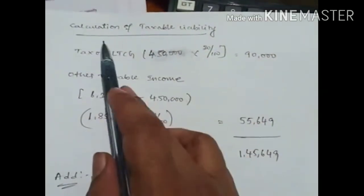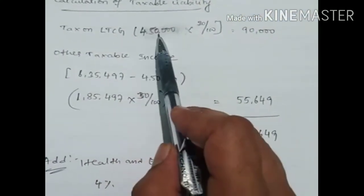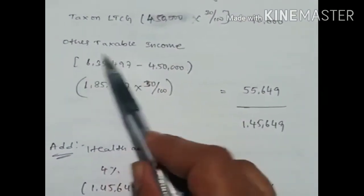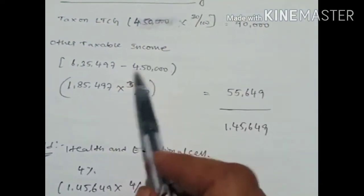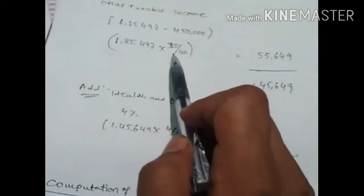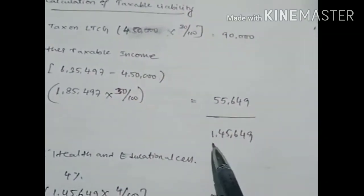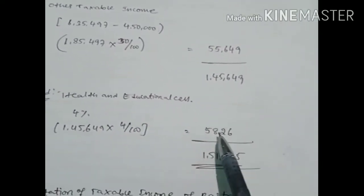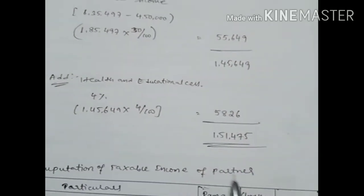Tax liability calculation: long-term capital gain of 4 lakh 50 thousand at 20 percent gives 90 thousand. For other taxable income: 6 lakh 35 thousand 497 minus 4 lakh 50 thousand leaves 1 lakh 85 thousand 497, taxed at 30 percent giving 55 thousand 649. Adding both: 1 lakh 45 thousand 649. Adding health and education cess at 4 percent, total tax payable to the government is 1 lakh 51 thousand 475.